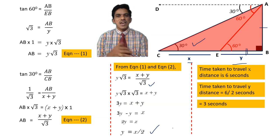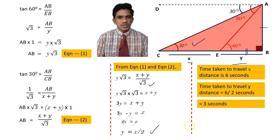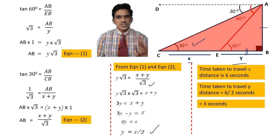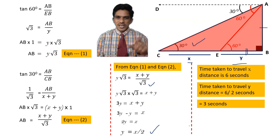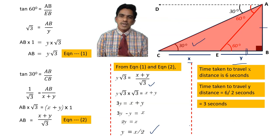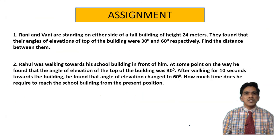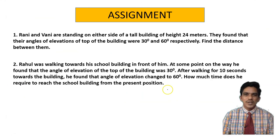So the car will reach the foot of the tower in 3 seconds. Even without knowing actual distances or heights, we used the given information to calculate the journey time. This is your assignment for today — solve these two problems and post the answers. Thank you.